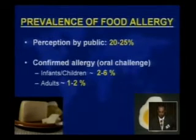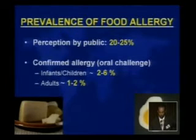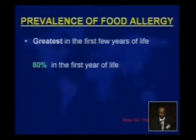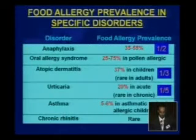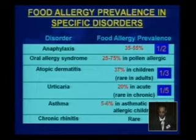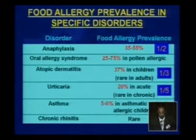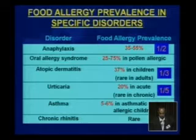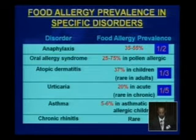Regarding prevalence of food allergy, the public perception is about 20 to 25 percent, but when confirmed by oral challenge, it is only two to six percent in pediatric patients and one to two percent in adults. It is greatest in the first few years of life, with 80 percent presenting in infancy or the first year. Food allergy is responsible for almost half of anaphylaxis cases, one-third of atopic dermatitis, about 20 percent of urticaria cases, five to six percent of asthma, and 25 to 75 percent of oral allergy syndrome in pollen-allergic patients.